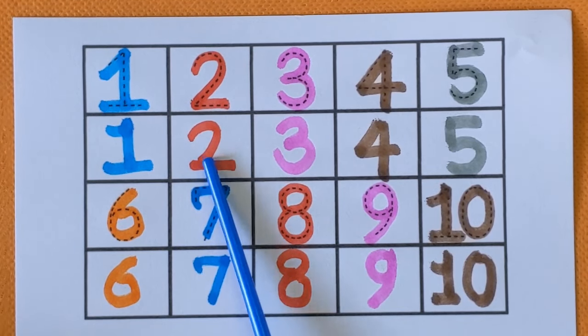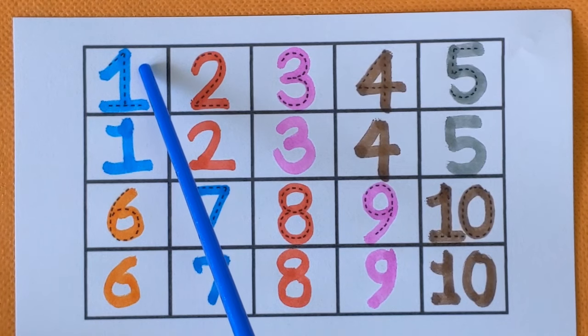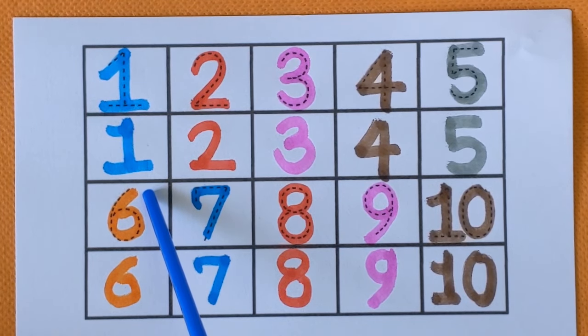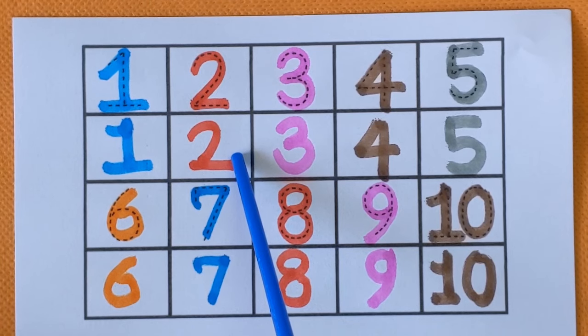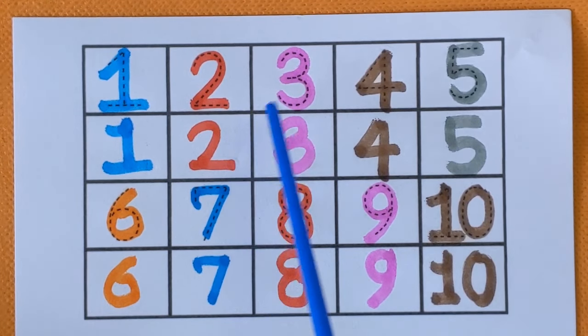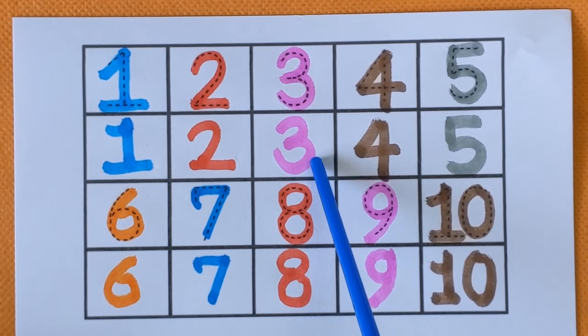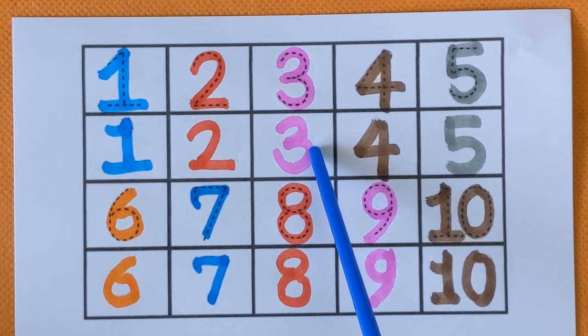Now you have to revise with me. Okay. It's a 1. O-N-E. 1. Blue color. Number 2. T-W-O. 2. It's a red color. 3. T-H-R-E-E. 3. Purple color.